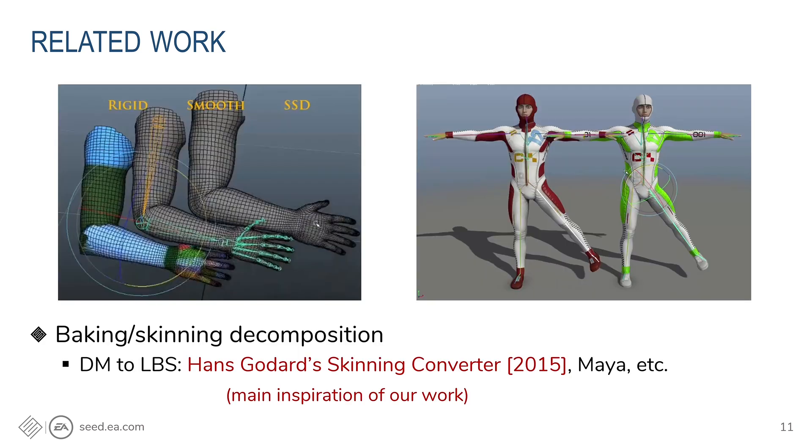It's also worth mentioning that in industry, there is the practice of learning LBS skinning weights from example poses, which is a data-fitting problem. Example poses may be modeled by artists or generated by simulation. And there was also an idea of using Delta mush to generate example poses. That was nice because Delta mush is easy to set up, but would be nicer if we don't even need to do data-fitting.